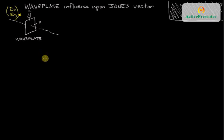This tutorial is going to talk about how a wave plate influences the polarization state of a beam of light, the wave plate influence upon the Jones vector.